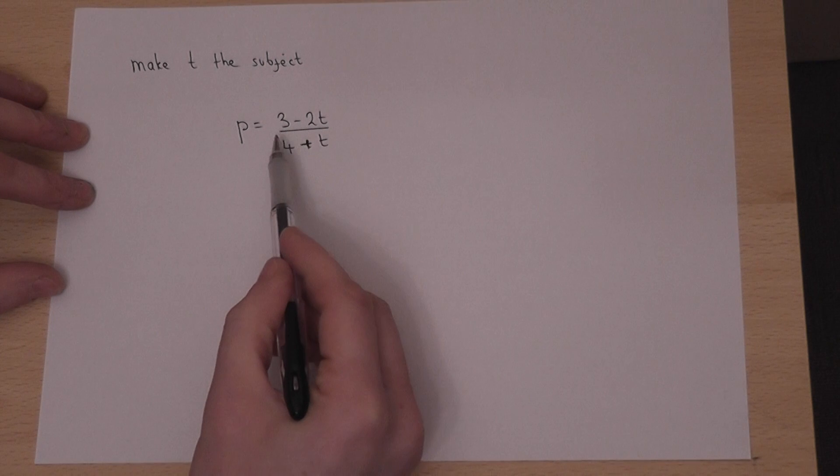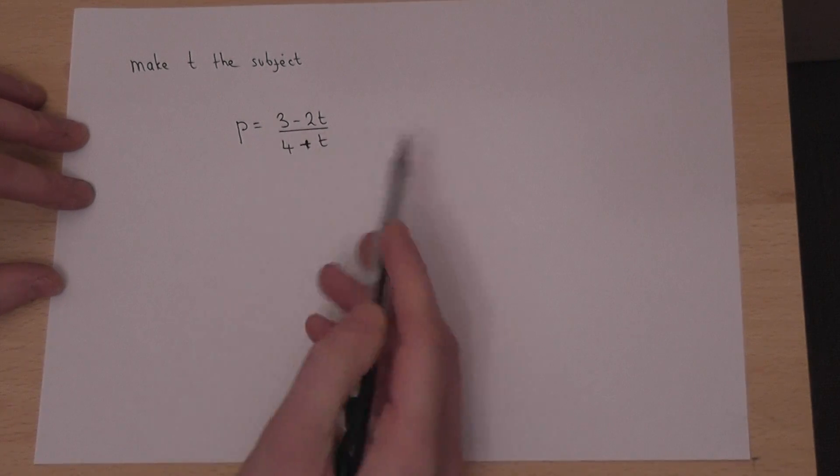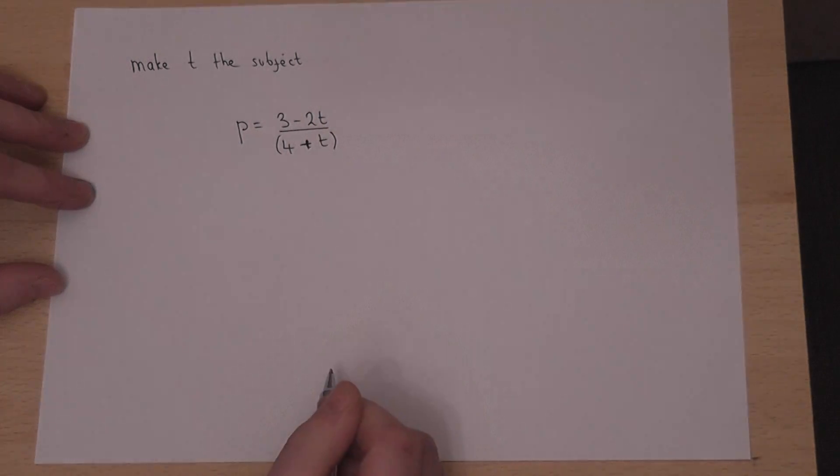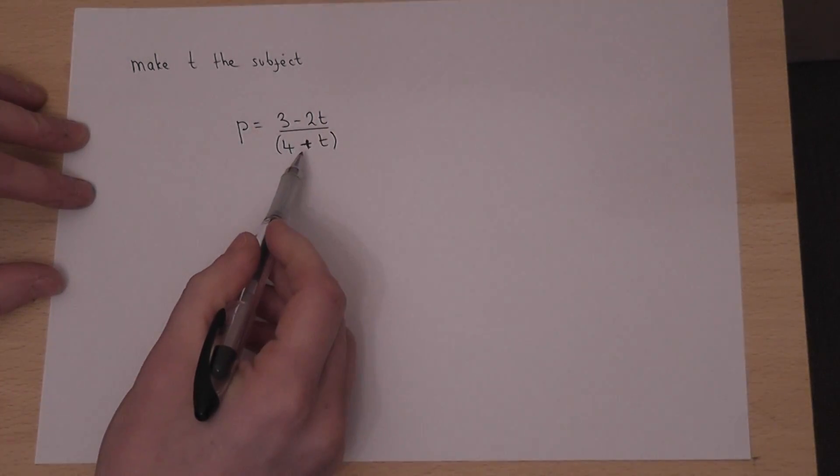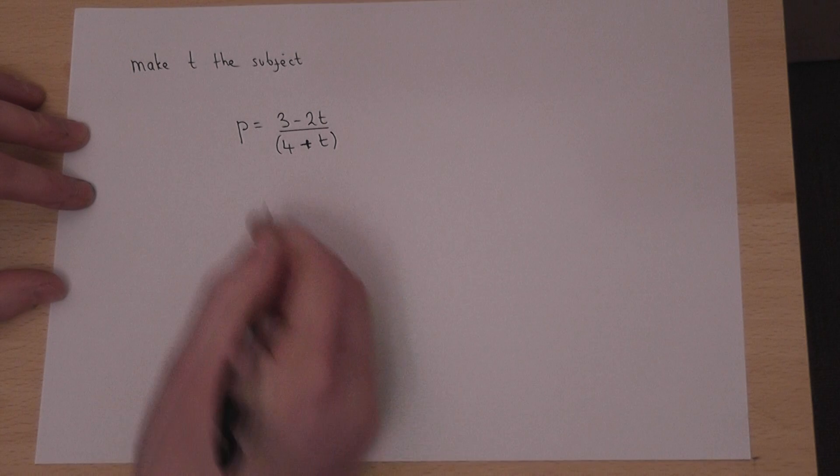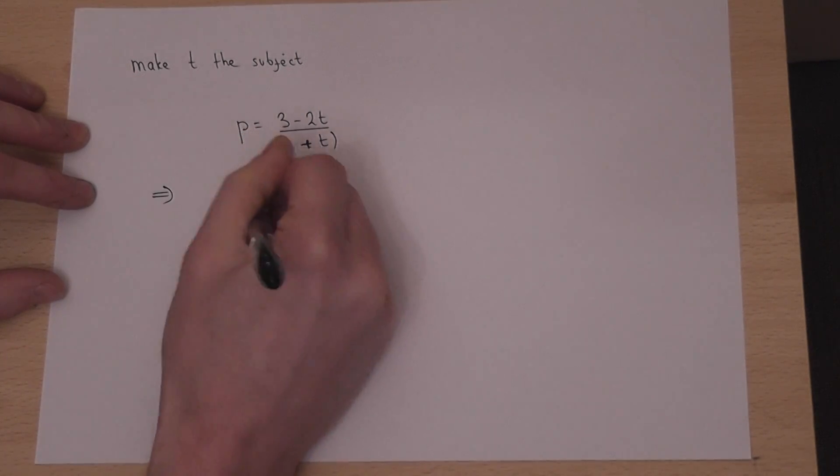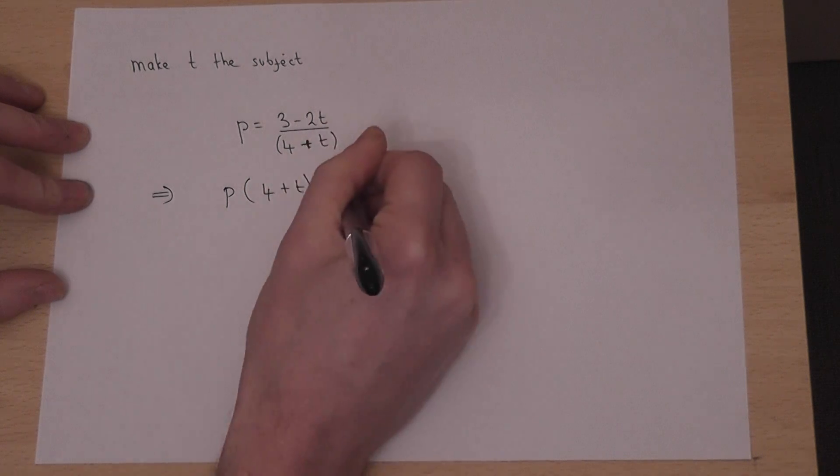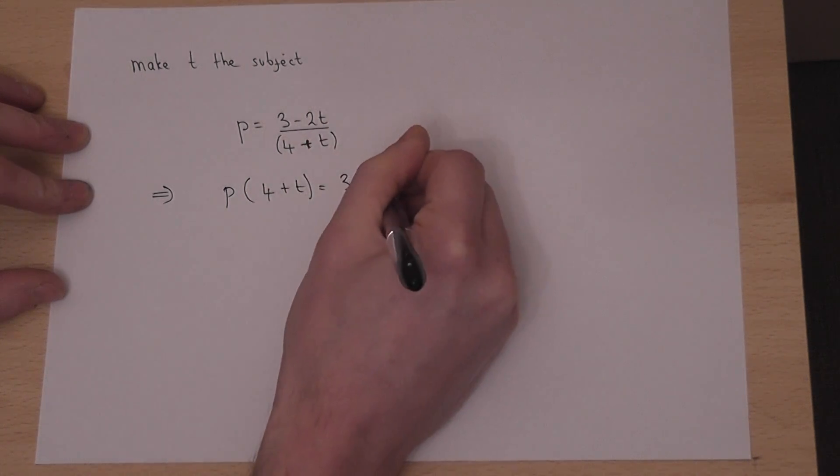Now we have a fraction and the denominator, so if I place a bracket around the 4 plus t, I can then multiply it up by the 4 plus t. So I get p times 4 plus t equals 3 minus 2t.